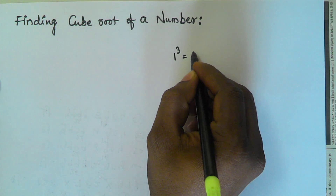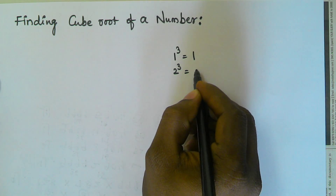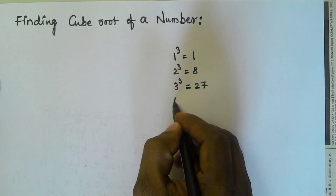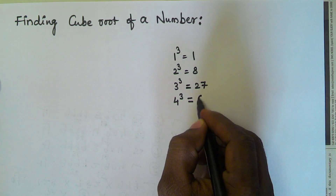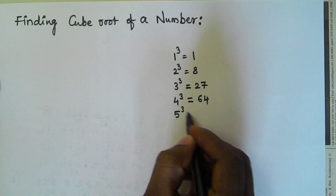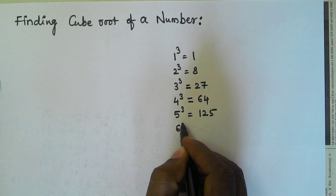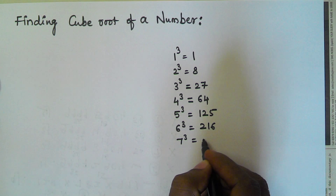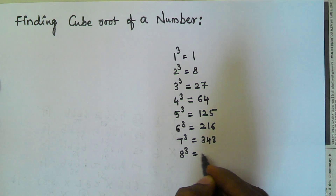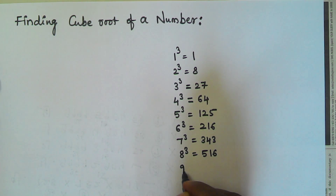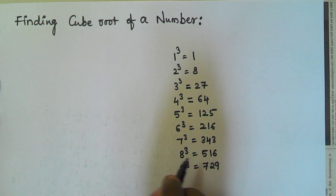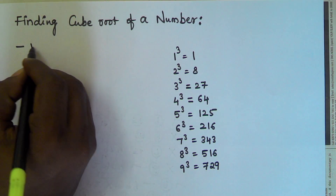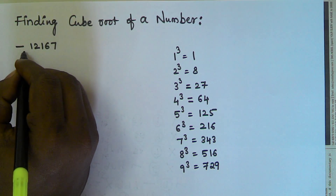1 cube is 1, 2 cube is 8, 3 cube is 27, 4 cube is 64, 5 cube is 125, 6 cube is 216, 7 cube is 343, 8 cube is 512, 9 cube is 729.